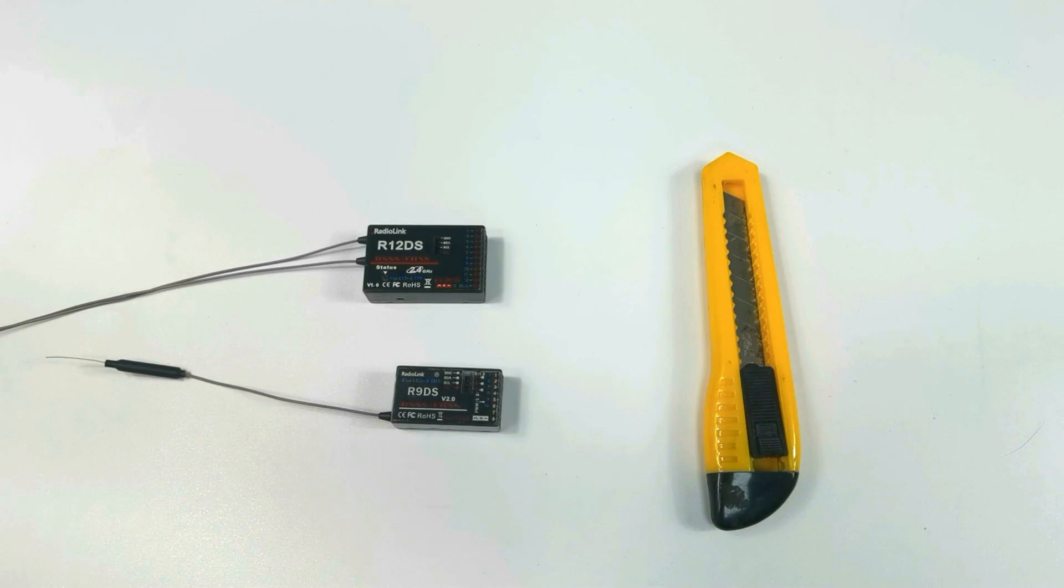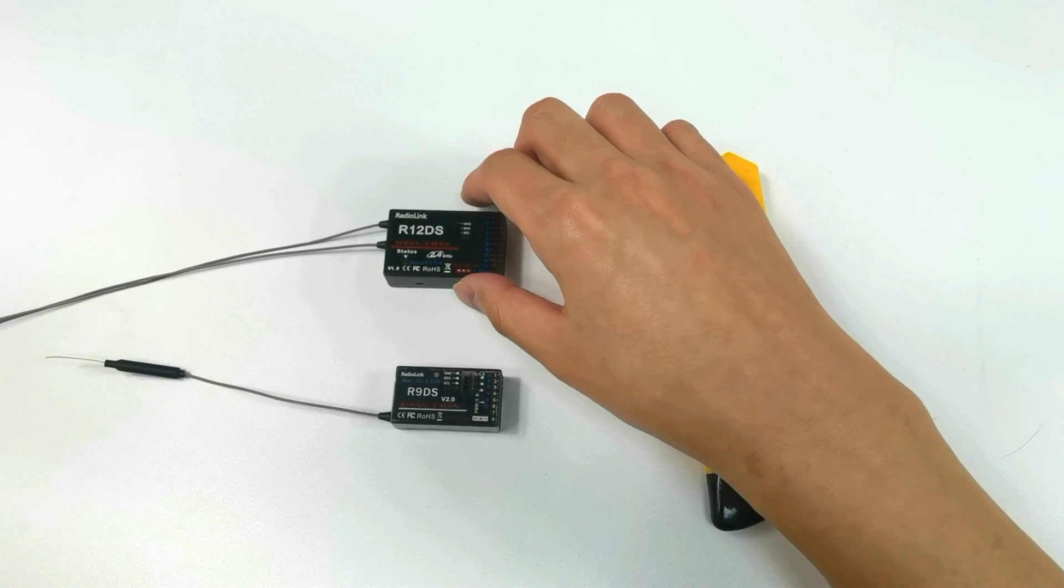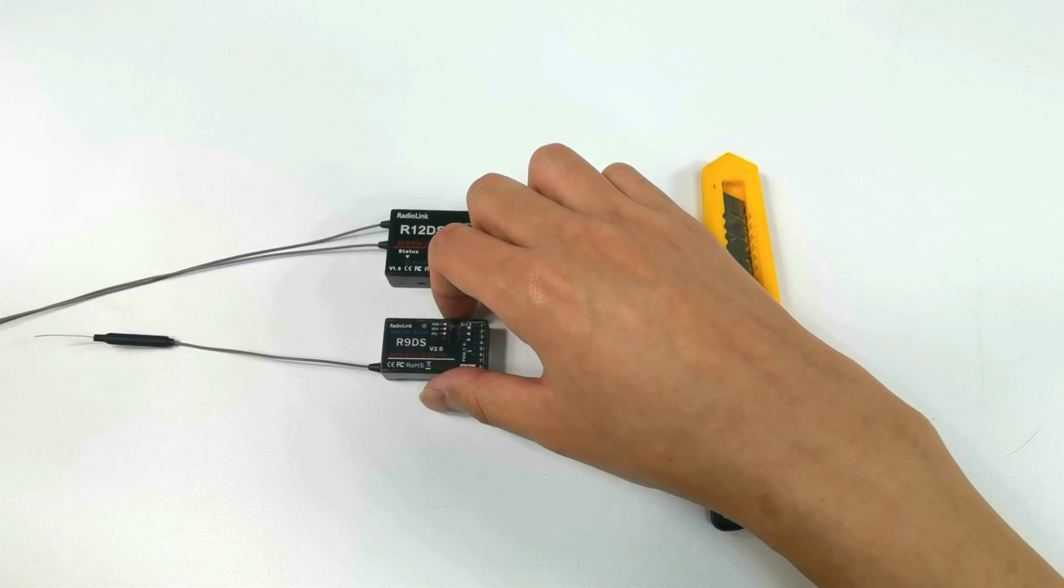How to replace the antenna of R9DS and R12DS receiver. They are protecting shells for R9DS and R12DS receiver.